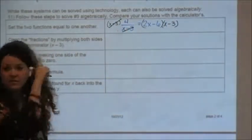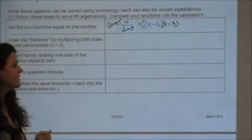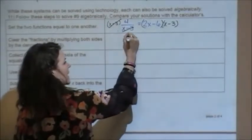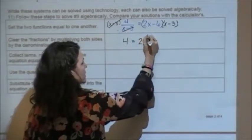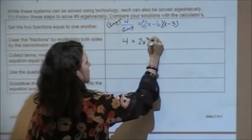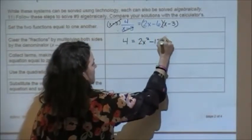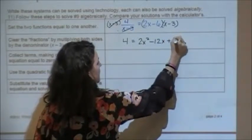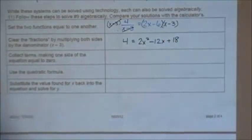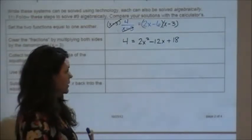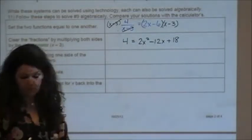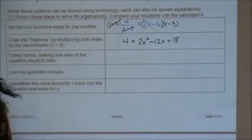On the left-hand side, that cancels the denominator, which was the point. On the right-hand side, what am I going to have to do? Foil. So once you foil it out, I've got 4 equals 2x squared minus 12x plus 18. Everybody okay so far?